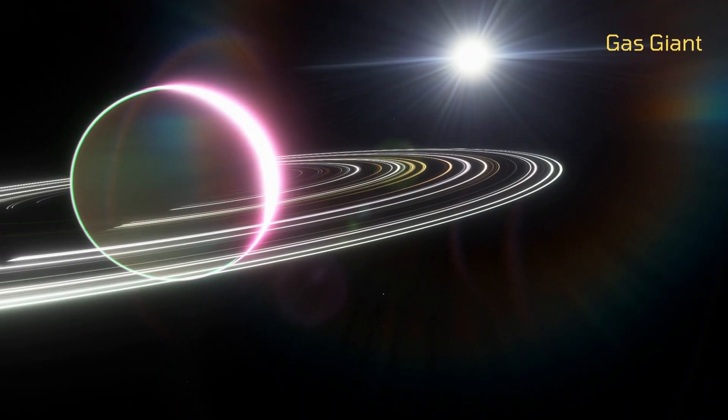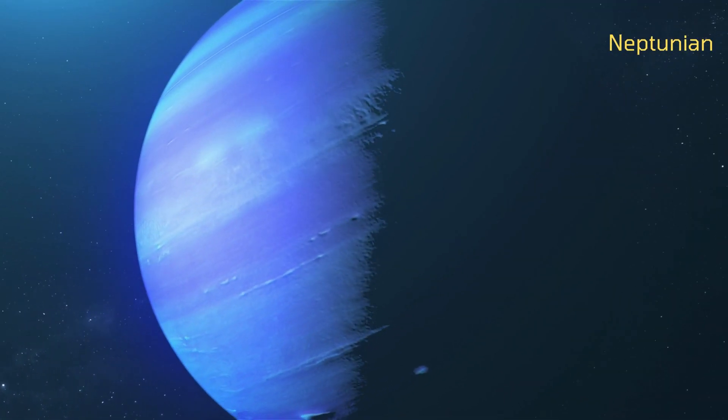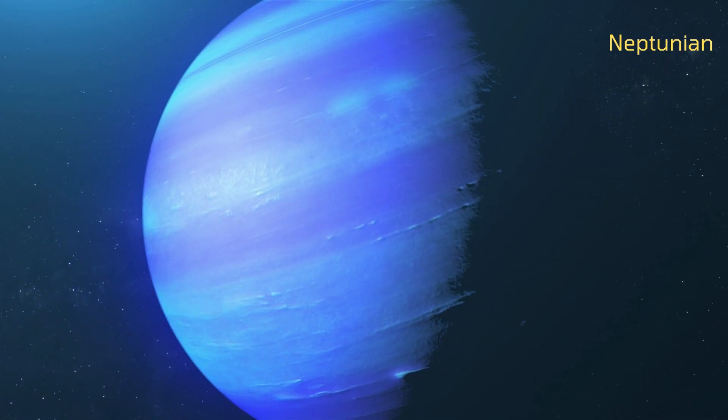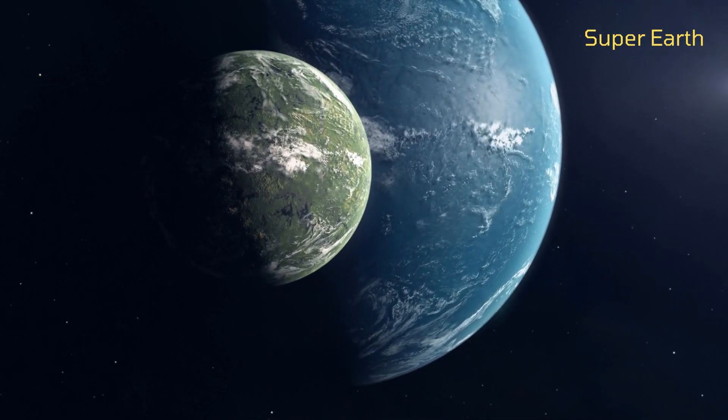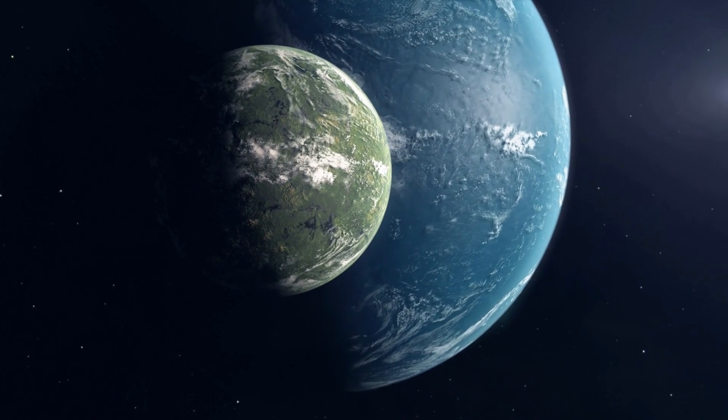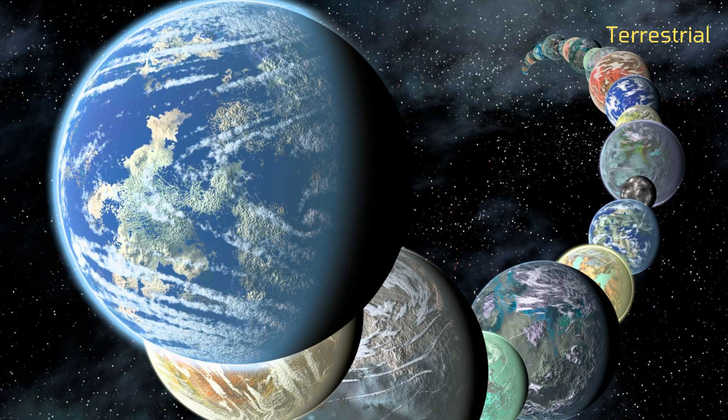Gas giants are the ones which are mostly composed of gases. Neptunian planets are the gaseous exoplanets around the size of Neptune. Earth-like exoplanets are rocky planets larger than planet Earth, and terrestrial exoplanets are the rocky worlds outside our solar system.